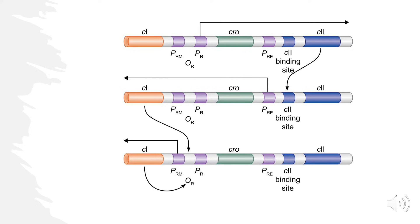So here's the gist: if we're making Cro, we're in the lytic cycle. Right off the bat upon infection, Cro is expressed because PR and PL are such strong promoters — we start in lytic. But the switch to lysogenic happens because of CII. If CII is stable enough to bind its site and position polymerase at PRE, we start making CI. If enough CI accumulates, it blocks PR, and we move into lysogenic growth. This image is a great summary — if you can tell this story following along with it, you have a solid grasp.